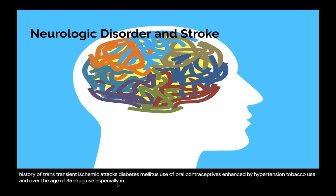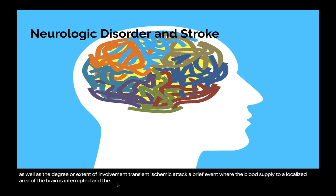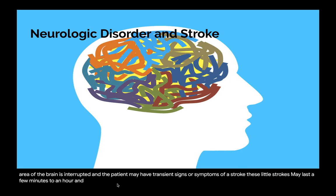The effects of a stroke depend on the location of the damage to the brain as well as the degree or extent of involvement. A transient ischemic attack (TIA) is a brief event where the blood supply to a localized area of the brain is interrupted and the patient may have transient signs or symptoms of a stroke. These little strokes may last a few minutes to an hour and may leave no permanent damage. A history of transient attacks is a possible risk factor and warning of a stroke.